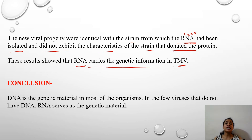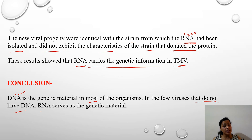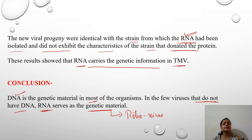With this experiment, it was proved that in the case of TMV, RNA carries the genetic information, not the protein. The conclusion was that in most organisms DNA is the genetic material, but there is a group of viruses which do not have DNA — in those cases RNA serves as the genetic material, and that group of viruses is known as retroviruses. These viruses replicate with the help of reverse transcription, using the reverse transcriptase enzyme.